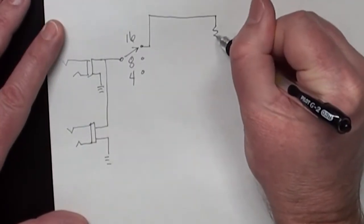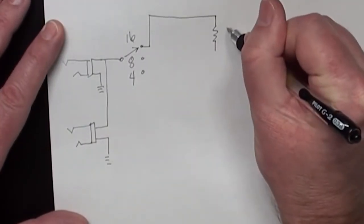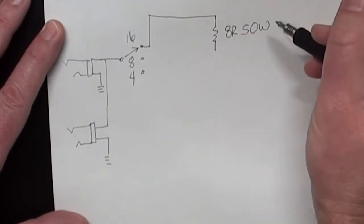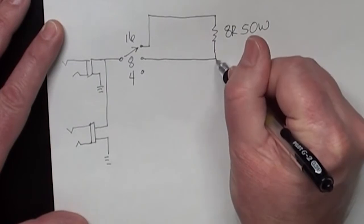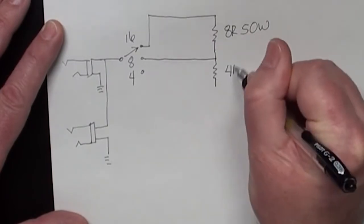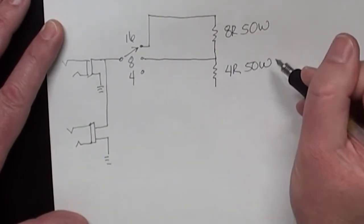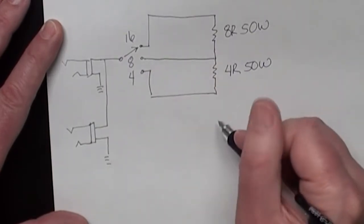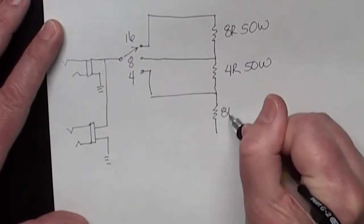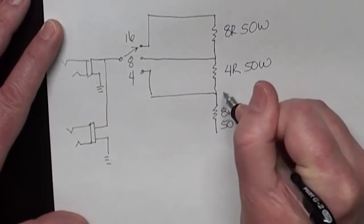We're going to have one 8 ohm 150 watt resistor here coming off of the 8 ohm lug. Then we'll have a 4 ohm 50 watt resistor, and then we'll have two 8 ohm 50 watt resistors in parallel connected to ground.